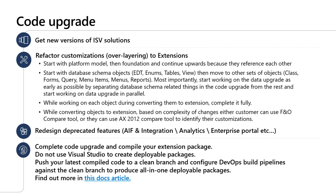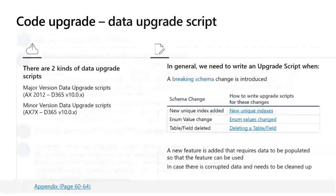Complete the code upgrade and compile your extension package. Do not use Visual Studio to create deployable packages. Instead, push your latest compiled code to a clean branch and configure DevOps build pipelines against that clean branch to produce all-in-one deployable packages.